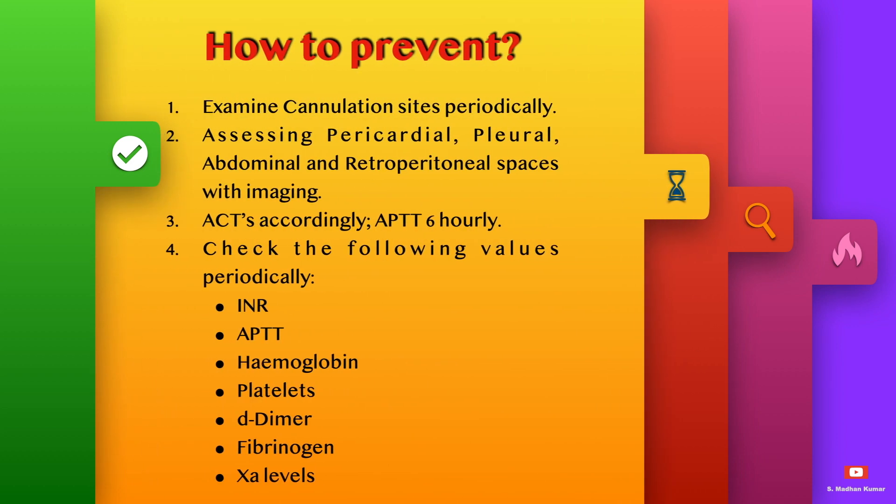How to prevent this bleeding on ECMO? Examine the cannulation sites periodically. Assess pericardial, pleural, abdominal, and retroperitoneal spaces with imaging. Do ACTs accordingly and do APTT every sixth hourly.